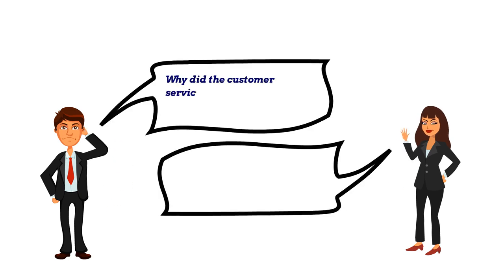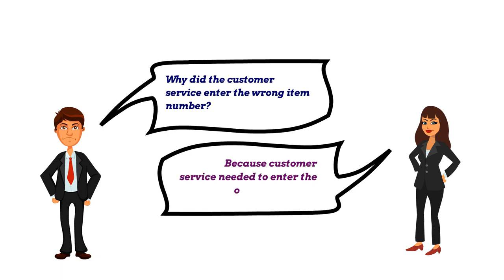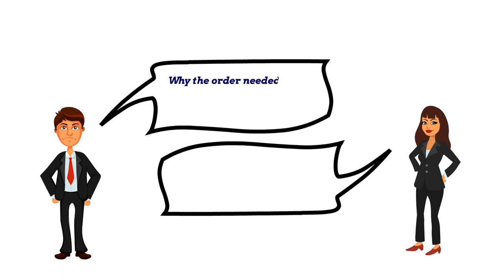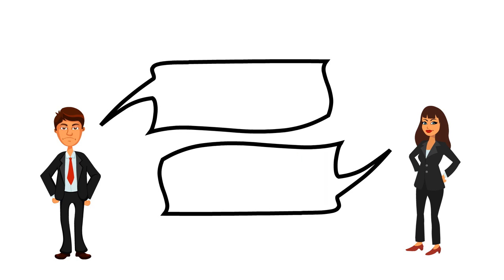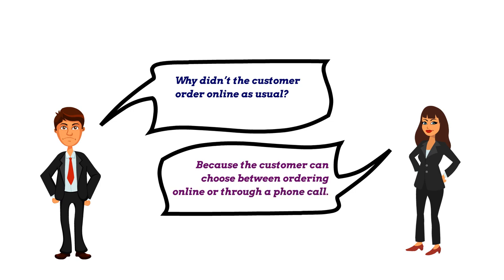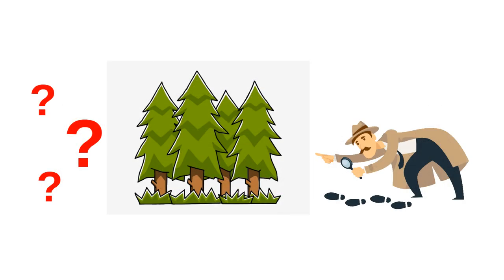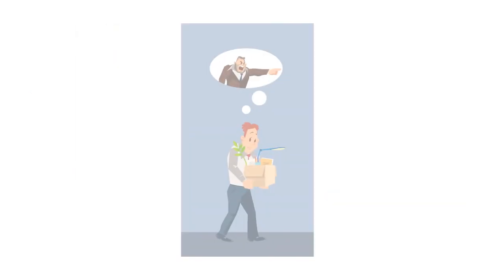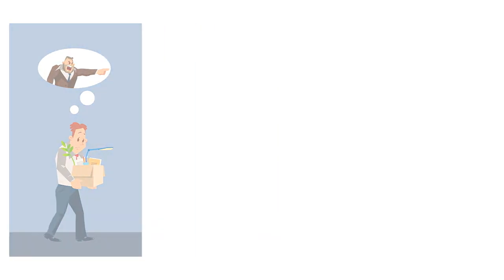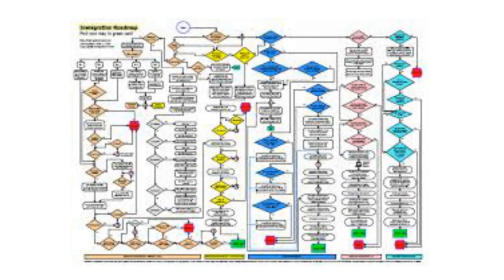Why did the customer service enter the wrong item number? Because customer service needed to enter the order manually. Why does the order need to be entered manually? Because the customer ordered through a phone call instead of sending it online as usual. Why didn't the customer order online as usual? Because the customer can choose between ordering online or through a phone call. We could find the real cause of the problem when using the 5Y method. In our exercise, the cause wasn't the customer service. The cause was within the order process, which should be investigated further.